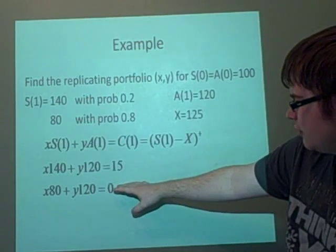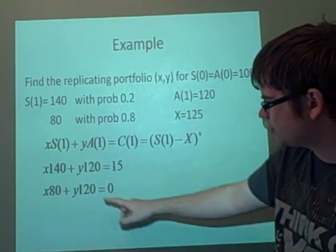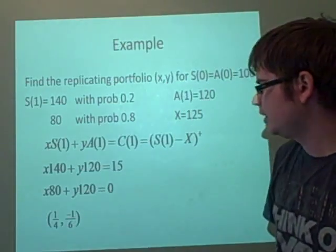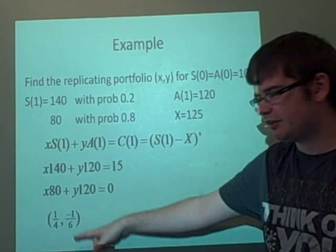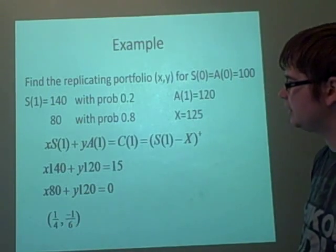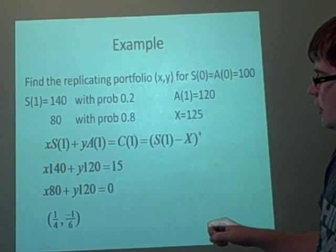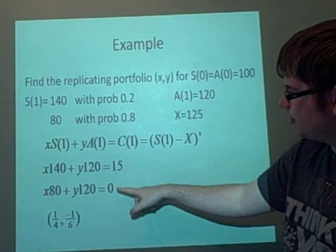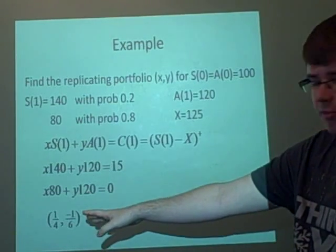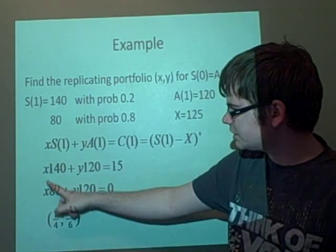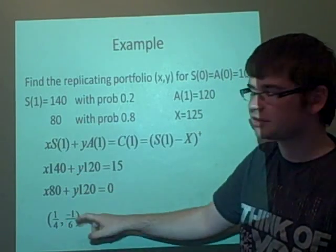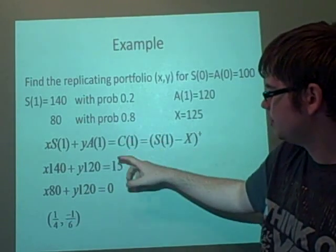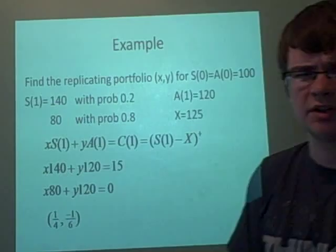So if we subtract one from the other to get rid of these Y's, it'll give us a value for X of a quarter, and then you can put that value and you get a value for Y, which is minus a sixth. Now, if we look at this, we can see this is replicating it. Because this is what we get when we're using the call option. If we're replicating that option, then we just take the values X as a quarter, Y as minus a sixth. And we don't have to do this call option, we can get the same output as we would have with it. Hope that made sense. Thank you very much.